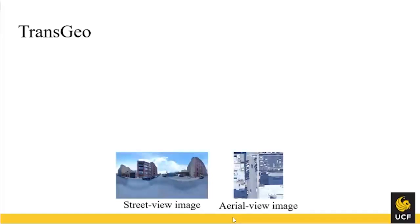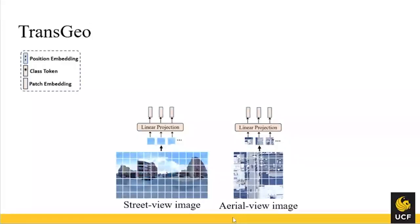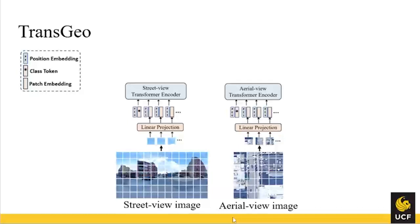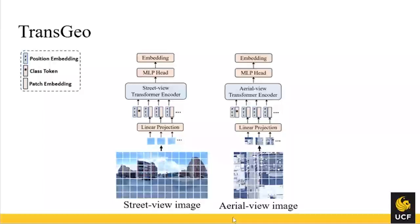Here is the design of our architecture. We have the street view and aerial view images, break them into small patches, project them into patch embeddings, add positional embeddings, and add a class token for the output. We put them into two different encoders — one for street view and one for aerial view — to learn different information for those two views. Then we put them into an MLP head to get the final embedding. This is trained with standard triplet loss, and we call this Stage 1 of our method.